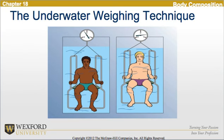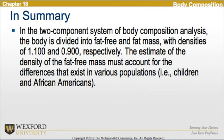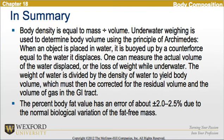In summary, in the two-component system, the body is divided into fat-free and fat mass with densities of 1.1 and 0.9 respectively. The estimate of fat-free mass density must account for differences that exist in various populations, such as children and African-Americans. Body density equals mass divided by volume. Underwater weighing uses the principles of Archimedes — when an object is placed in water, it is buoyed by a counterforce equal to the water displaced. The weight of the water is divided by the density of water to yield body volume, corrected for residual volume and GI tract gas. The percent body fat has an error of approximately plus or minus 2 to 2.5% due to normal biological variation of fat-free mass.